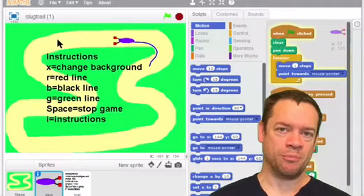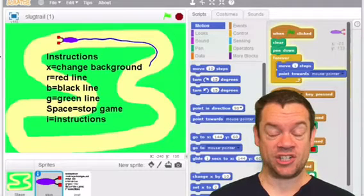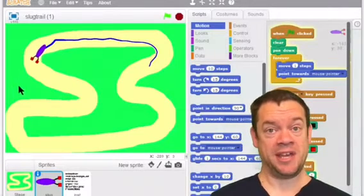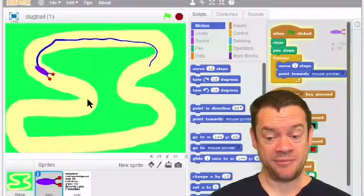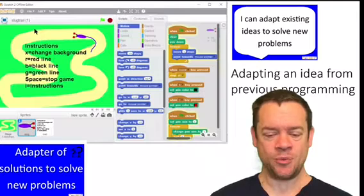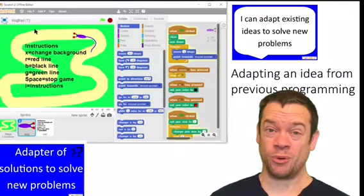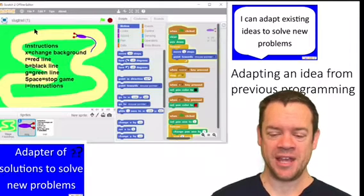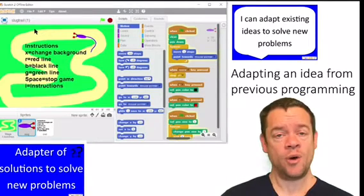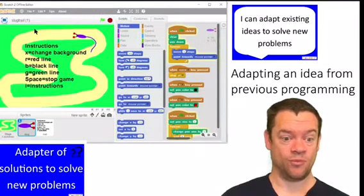There is actually a bit of continuous movement that happens in there, but it's done in a different way. So what they've got to do is go and see if they can adapt some of those solutions to solve a new problem. We're dipping into generalization here, which I think is really useful and a really good problem-solving skill to have as well.